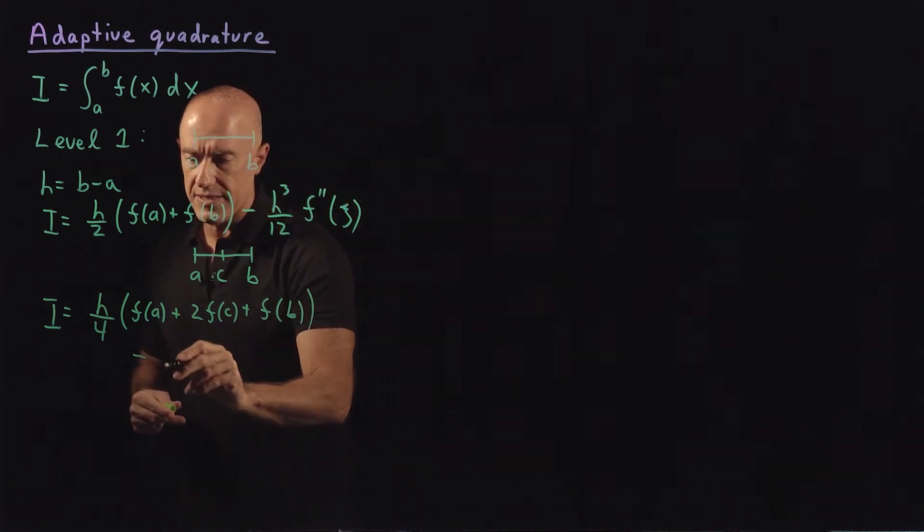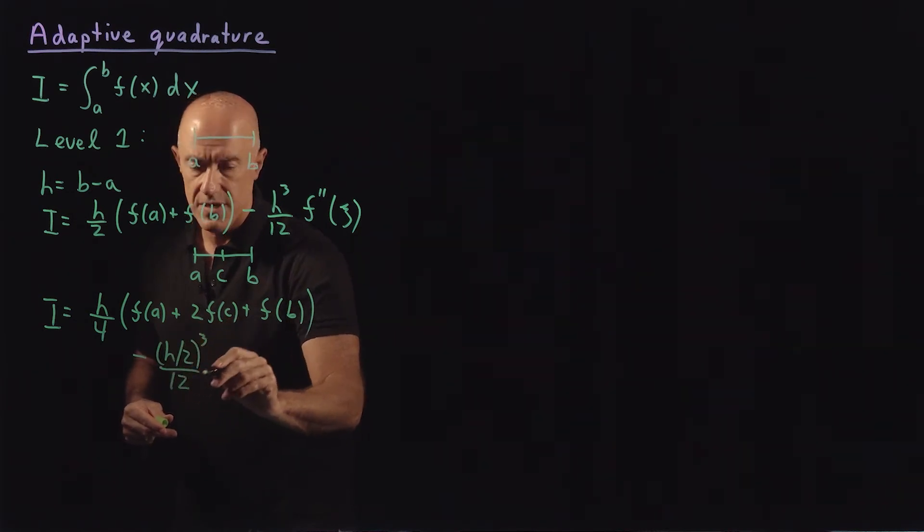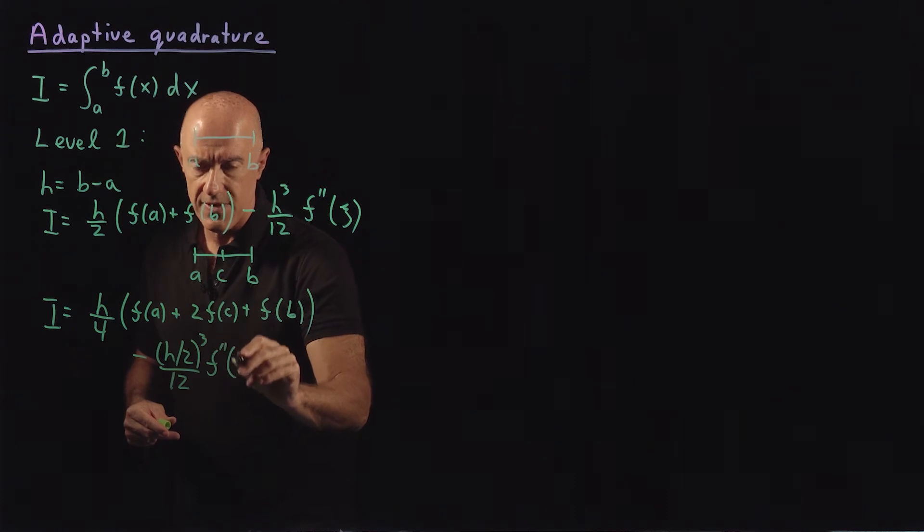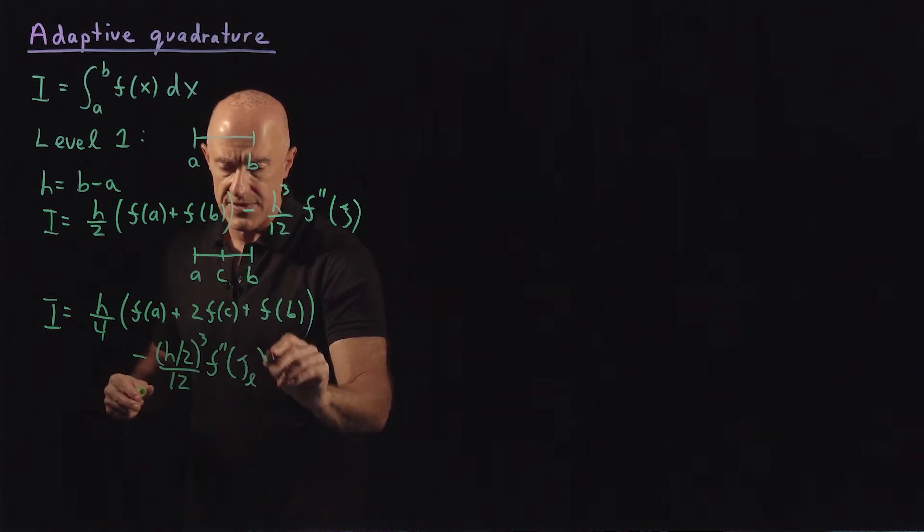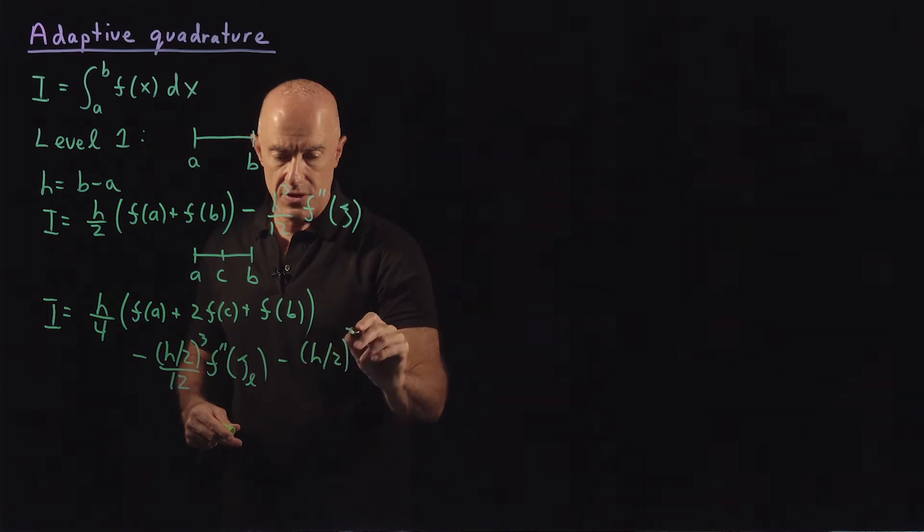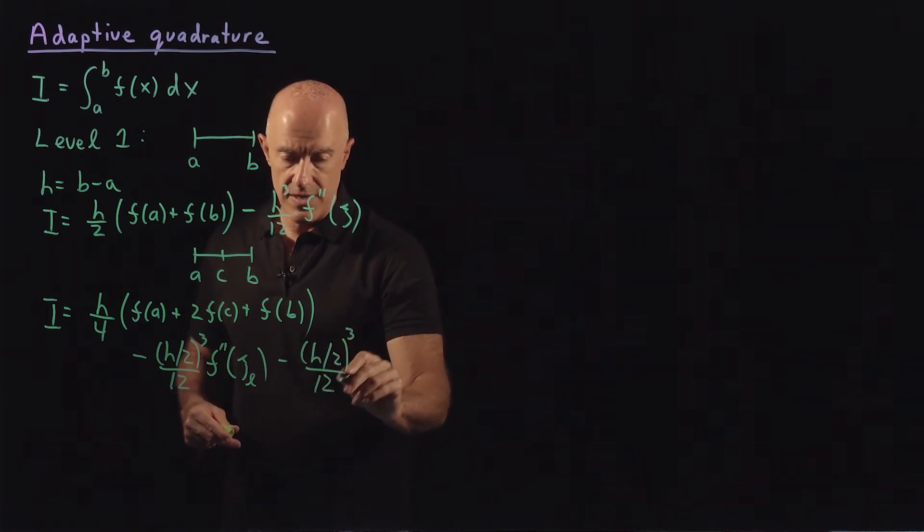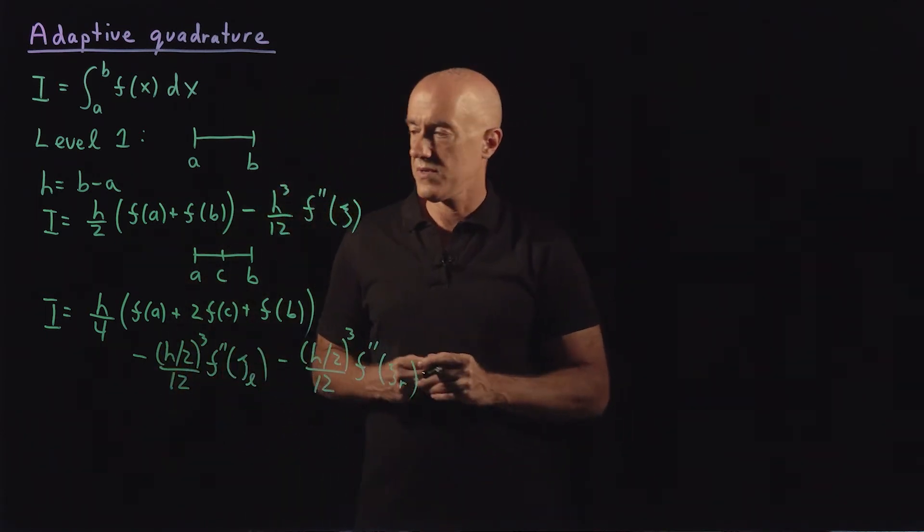The integral would be now, the width here is h over 4 instead of h over 2. And then we would have f of a plus 2 times f of c plus f of b using the extended trapezoidal rule. And then we would have two error terms.